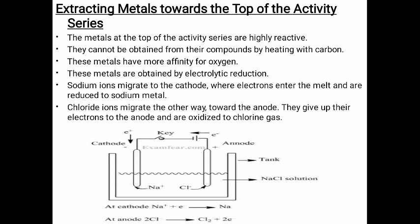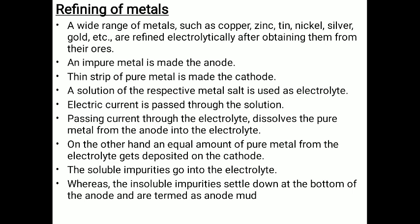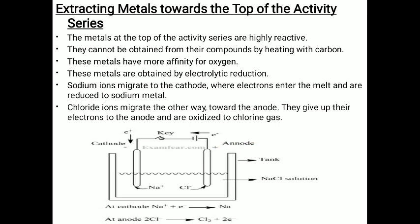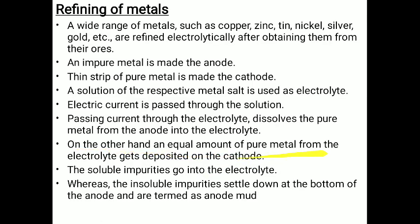Now, refining of metals. A wide range of metals such as copper, zinc, tin, nickel, silver, and gold are refined electrically after obtaining them from their ores. The impure metal is made the anode, and a thin strip of pure metal is made the cathode. A solution of the respective metal salt is used as electrolyte. When current is passed through the electrolyte, pure metal dissolves from the anode into the electrolyte.